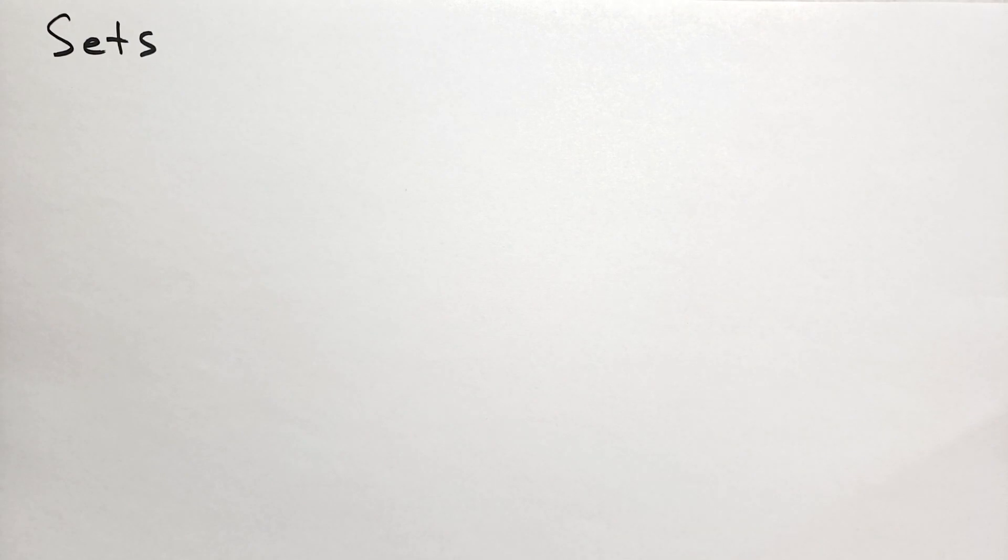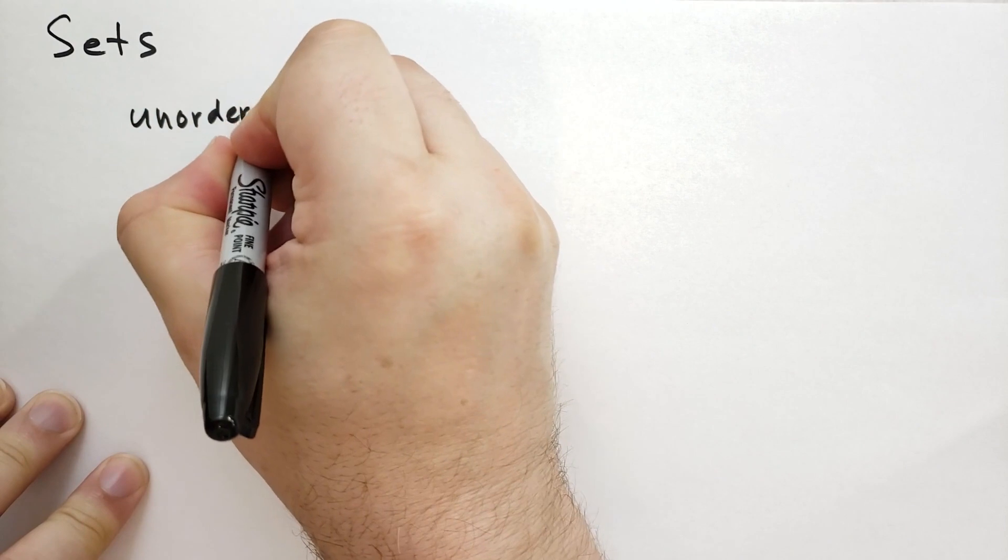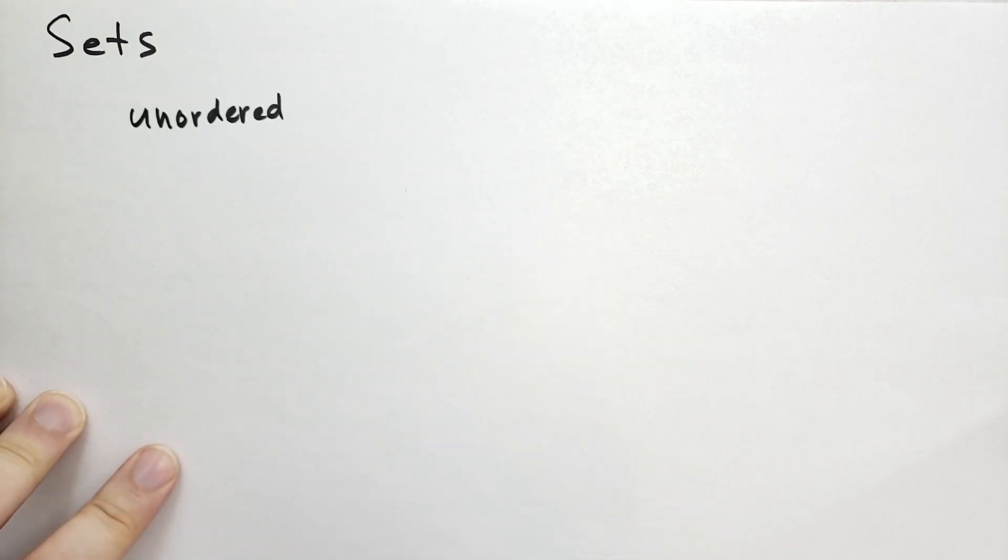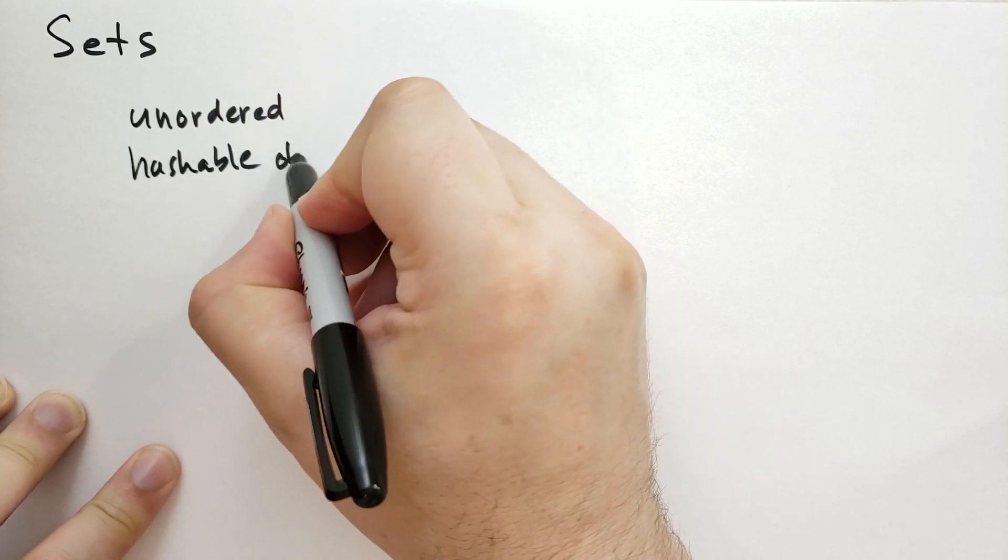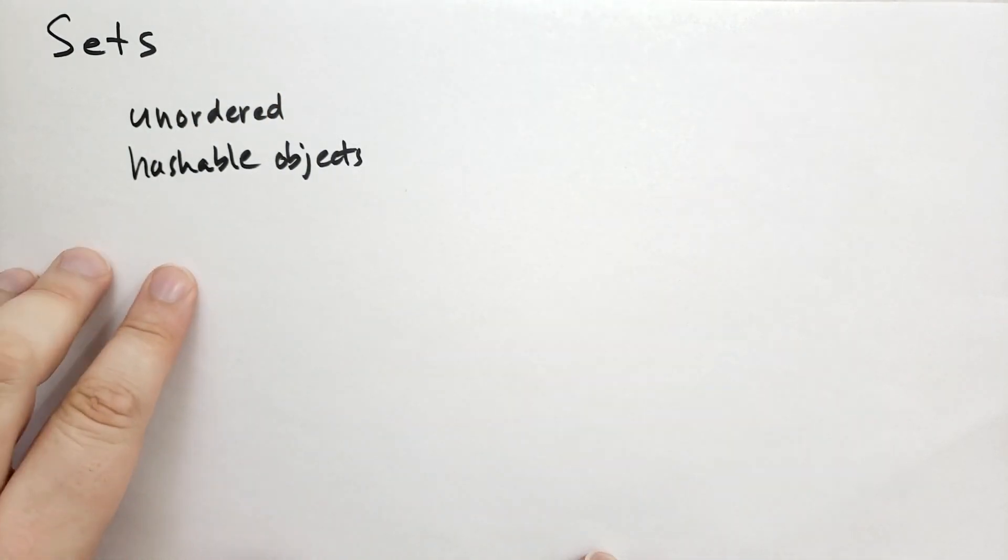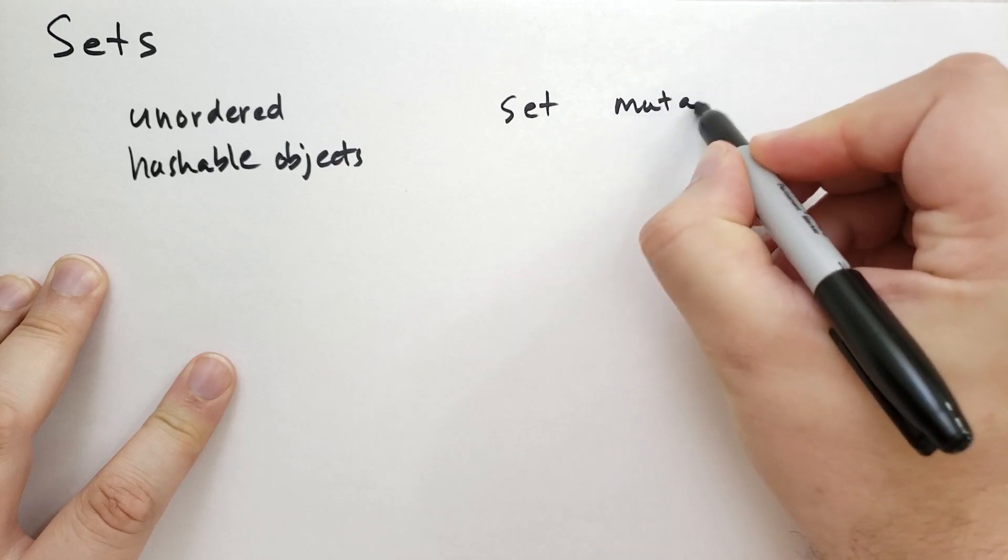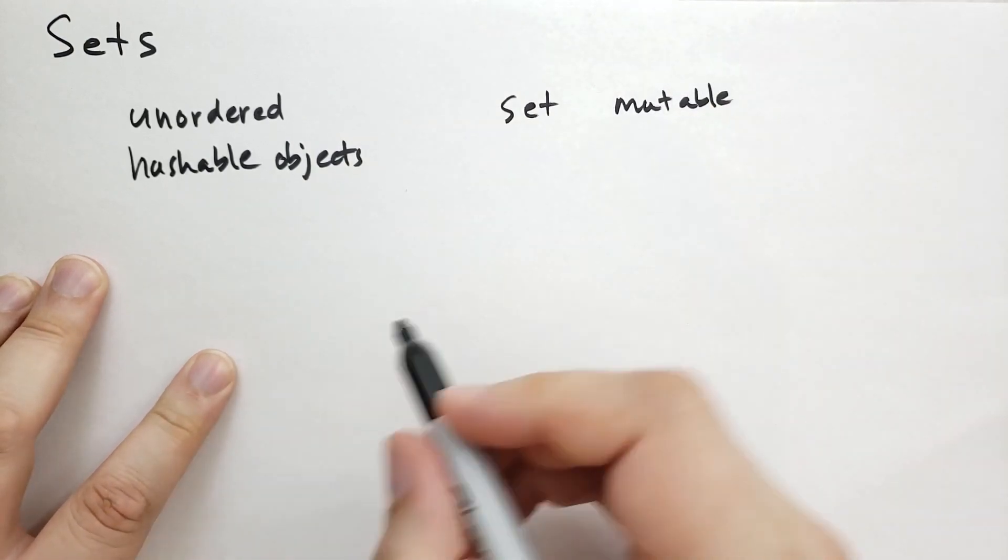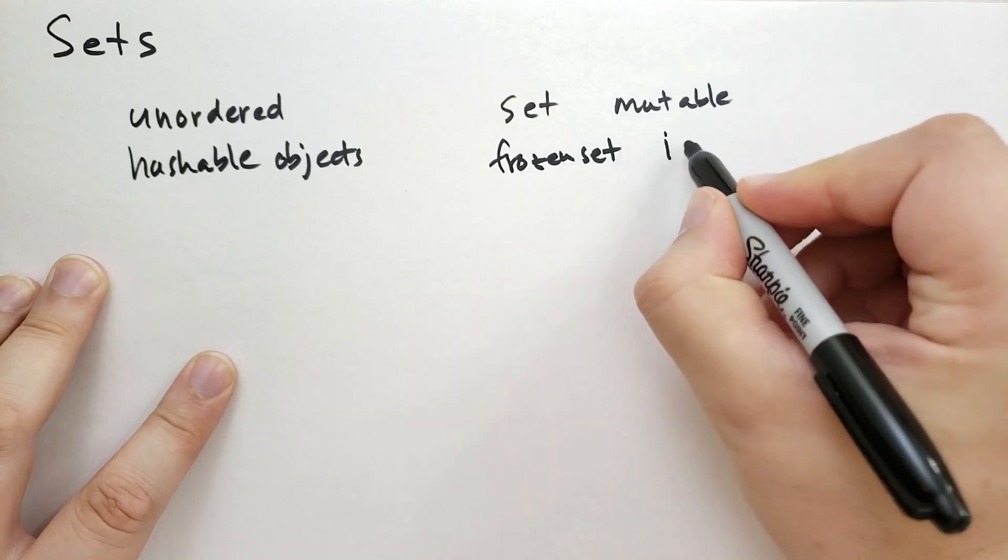So in Python, a set is unordered and can only contain hashable objects. So if it can be the key of a dictionary, it can be an item in a set, otherwise it's not allowed. The set object itself is mutable, but you also have a frozen set that is immutable.